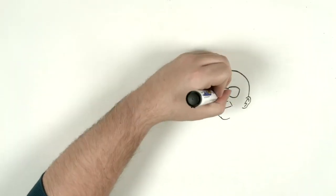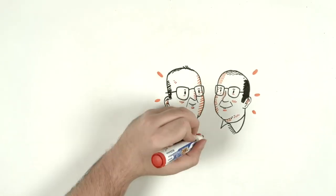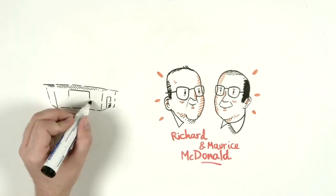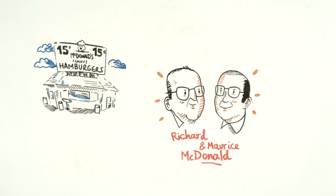It all started in 1937 when Richard and Morris McDonald set up a hot dog stand in California. Three years later, in San Bernardino on Route 66, they opened McDonald's famous barbecue with 25 different dishes.